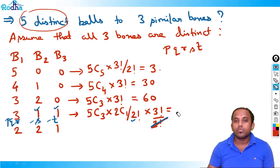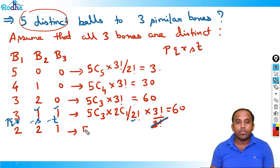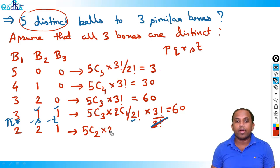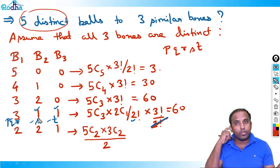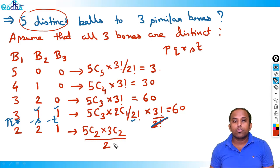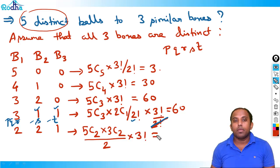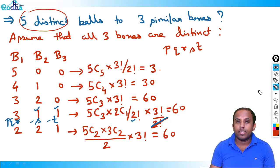For case 2,2,1: select two balls out of five — 5C2 — then from remaining three, select two more — 3C2 — divide by 2 since the two groups of size 2 are repeating. Then distribute these three distinct groups across three distinct boxes — 3! ways. This gives (10 × 3)/2 × 6 = 15 × 6 = 90.